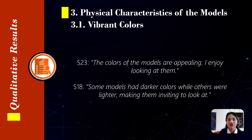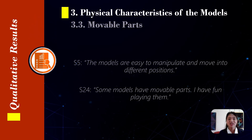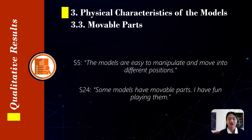The third main theme pertains to the physical characteristics of the models. The first sub-theme refers to the models' vibrant colors. Students provided positive feedback about the vibrant colors of the models, describing them as appealing and striking. A student expressed that the models are visually appealing, while another indicated the models' variety of light and dark colors made them striking to observe. The second sub-theme refers to the models' compact sizes. Students conveyed descriptions of the models as varying in size, mostly indicating small sizes. A student called the models cute in size, while another highlighted that they come in various sizes. The third sub-theme refers to the models' movable parts. Students appreciated the moving parts of some models, finding them fun to handle during lessons. They shared that the articulated parts were easy to move, some parts were easily manipulated and repositioned.